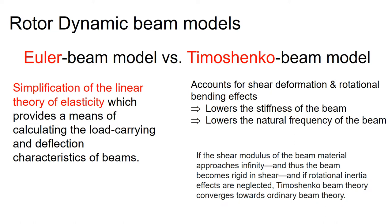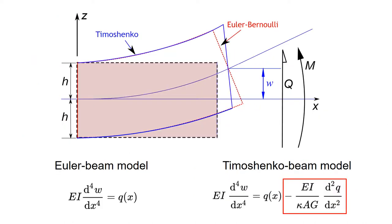The Euler beam model is derived from a simplification of linear theory of elasticity and ignores shear deformation. Here is an illustrative description of how shear deformation makes the difference between the Euler beam model versus the Timoshenko beam model.